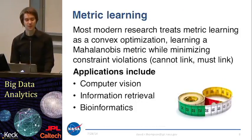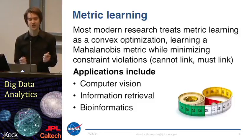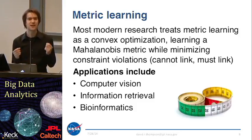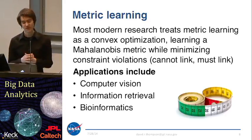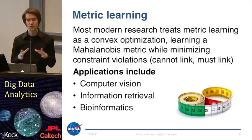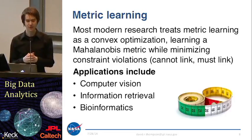This leads to the topic of metric learning, which is an area of a lot of active research. Most modern metric learning research treats it as a convex optimization problem. They take a Mahalanobis distance and then apply constraints based on the class structure in the data — such as data points having similar class must be close together, and data points having different class must be far apart — and apply techniques from operational research to tune that Mahalanobis distance metric, that sigma matrix, to best separate the different classes. There are challenges in keeping the matrix positive semi-definite, which it must be in order to be a valid Mahalanobis metric.